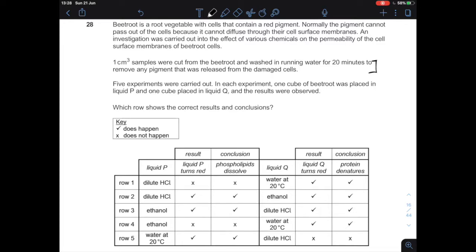So, they are basically telling you that you have blocks of beetroot that is basically all membrane outside and all pigments, for example, inside.